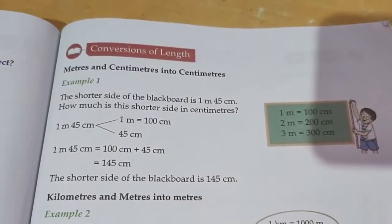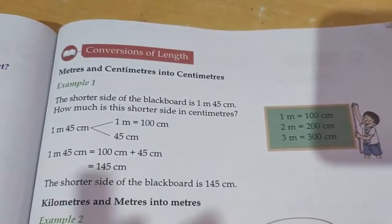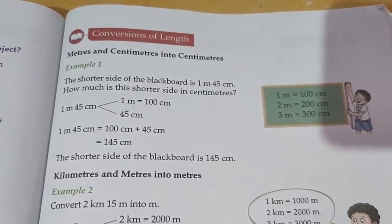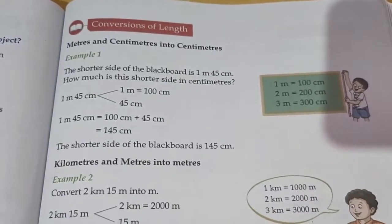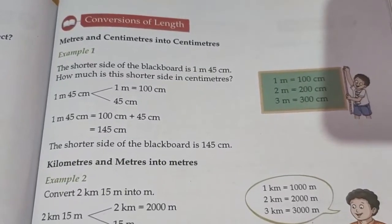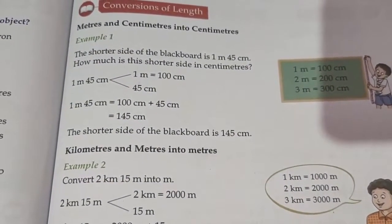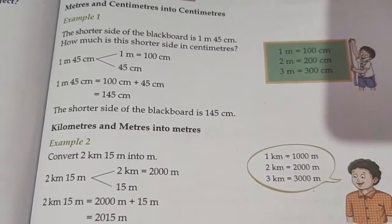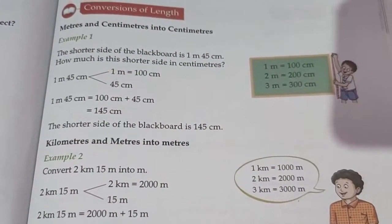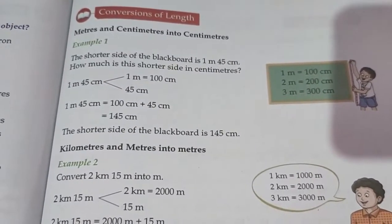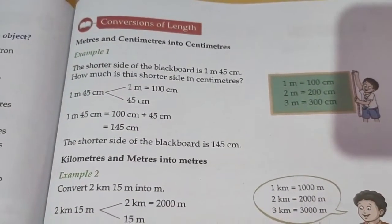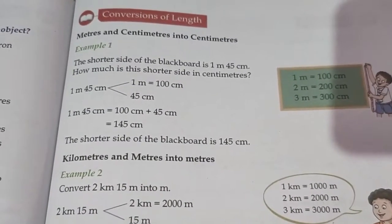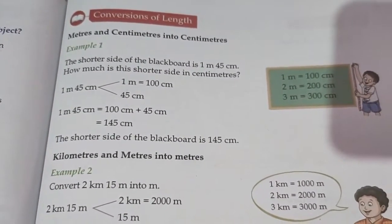Today we are also going to do conversion of length. There are different types of units — meters, centimeters, kilometers, liters, and so on. I introduced you to meter, kilometer, centimeter, gram, kilogram, liter, and milliliter in the first video. Now we need to do conversions — for example, if we have centimeters, convert to meters; if meters, convert to centimeters; if kilometers, convert to meters, and so on.